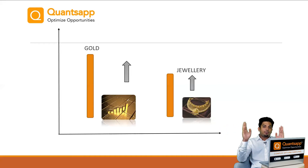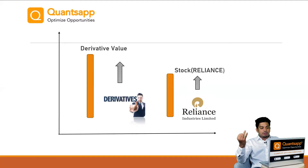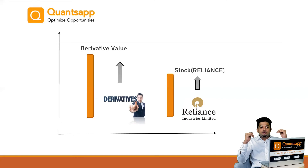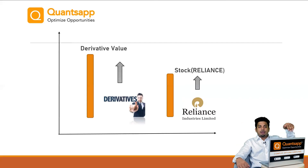Now let's relate this to the stock market. Let's say there are Reliance futures contracts and Reliance options contracts. Reliance's share becomes our underlying. As and when Reliance's share price goes up, Reliance's futures contract price will also go up. It won't be the case that Reliance's share price is going down while its futures price is going up. It always has a linear payoff — if Reliance's share price goes down, its derivative contract, the futures contract, will also go down.